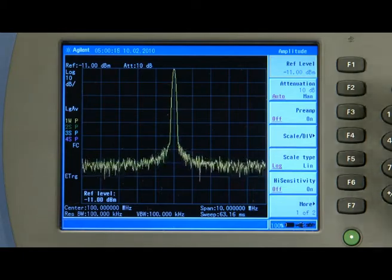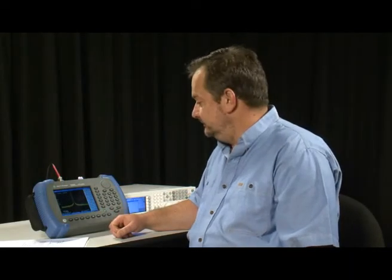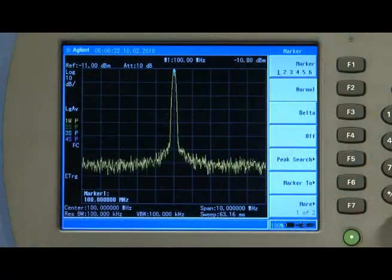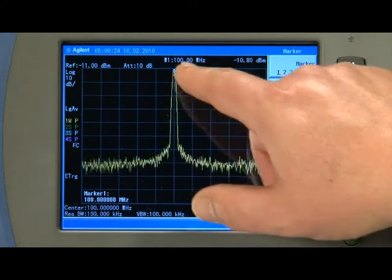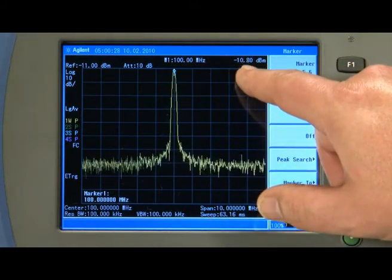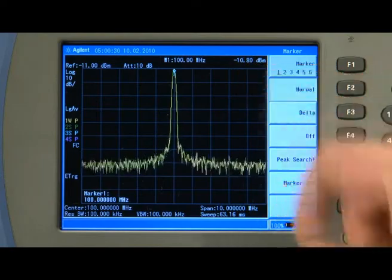Fantastic. So there's the 100 MHz signal. Now if I want to measure that I can always press the marker button and we can see there that the marker is indeed at 100 MHz and the level being measured is minus 10.8 dBm.